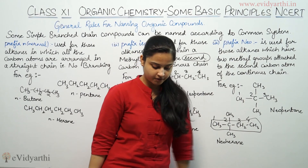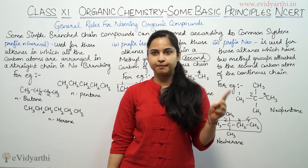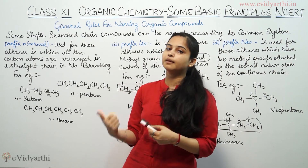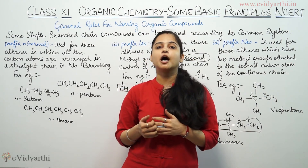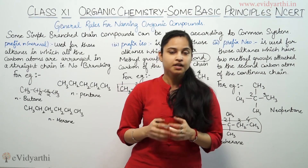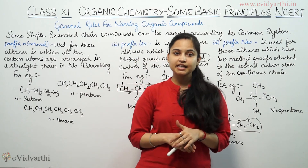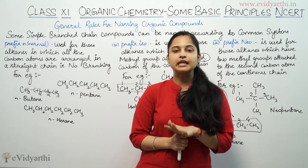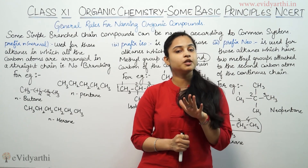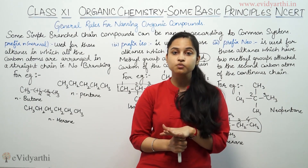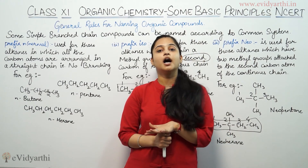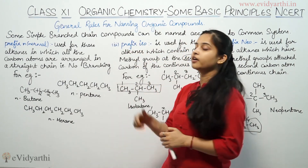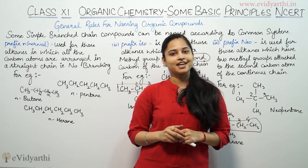Remember one important point: if the branching methyl group is not at the second carbon but at some other carbon, we will not be using this common name system with ISO or NEO. In that case, we will use IUPAC nomenclature instead. If the methyl group is not at the second carbon, we will not use these prefixes or the common name system — we will be using IUPAC nomenclature. So this was all about the initial rules for naming organic compounds. That's all for this session. Take care and goodbye.